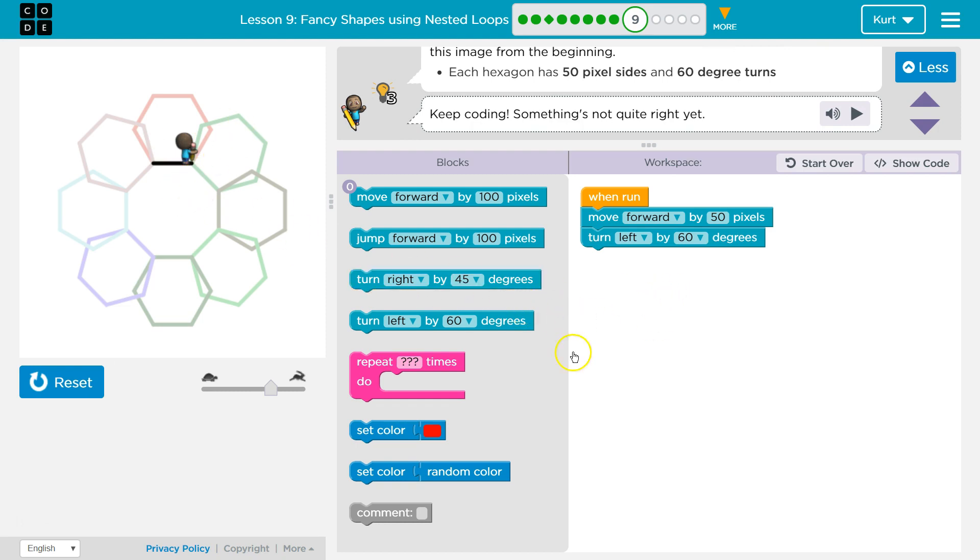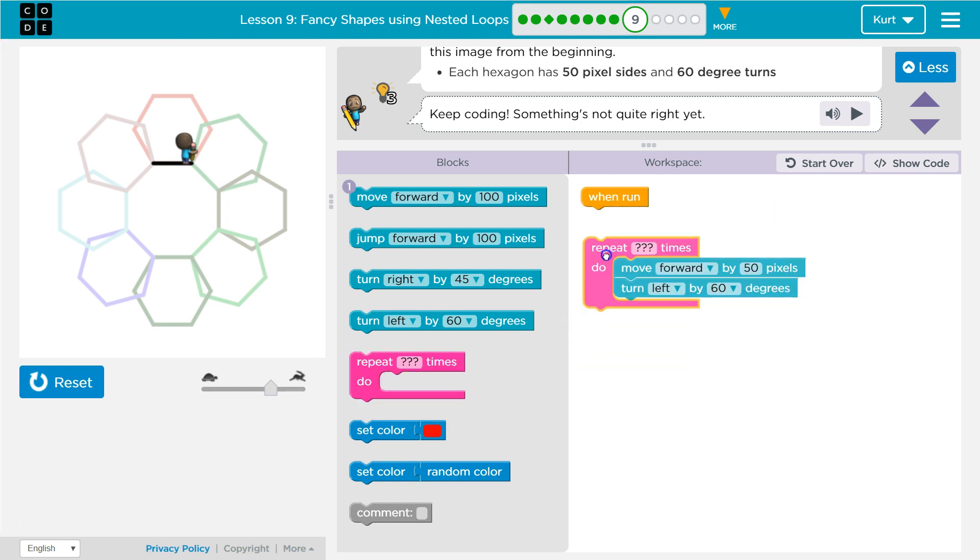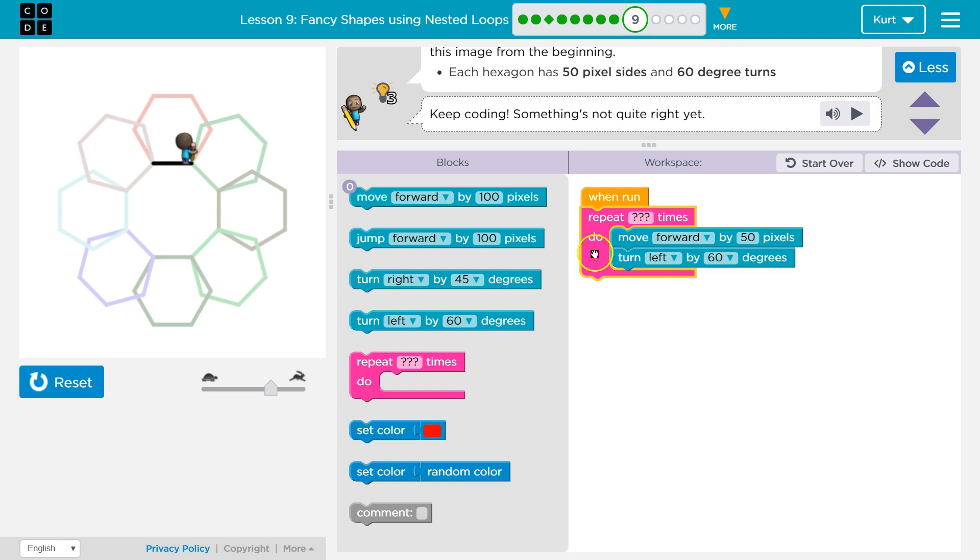Okay. Now we got one side. How can we do the rest of this without a move forward? We can with a repeat. And remember what this pink block does. This repeat loop loops every time. It repeats the code inside.